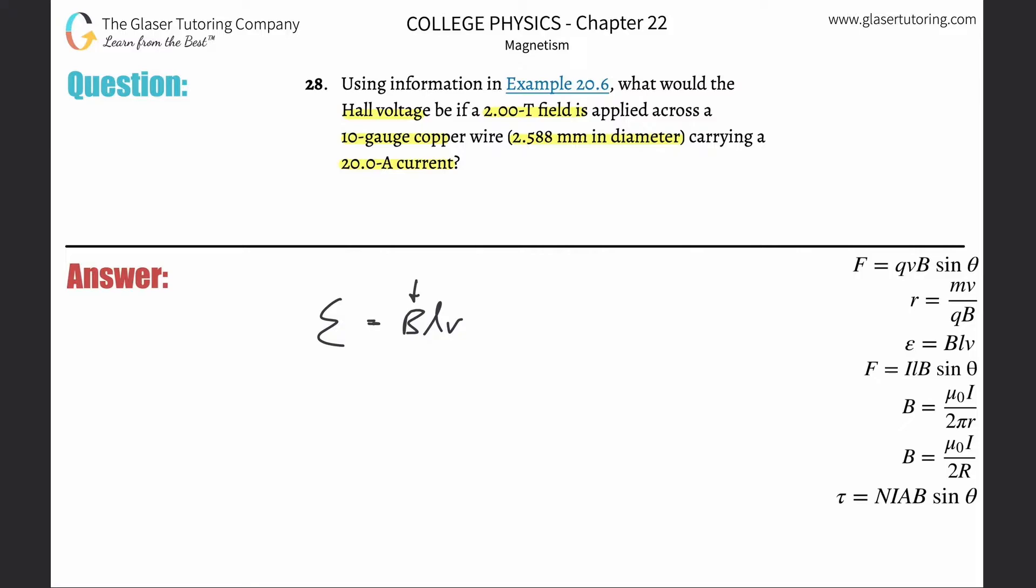We know B, they told it to us, it's 2. The path length is basically just the diameter, but we need that in meters. So we're going to take 2.588 and multiply it by 10 to the minus 3.